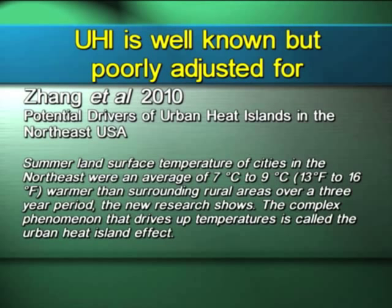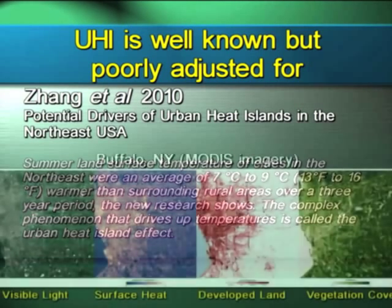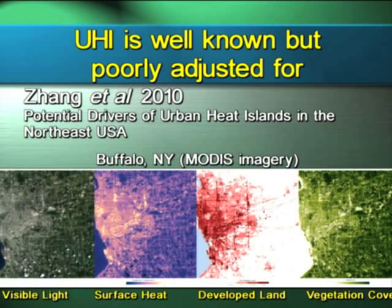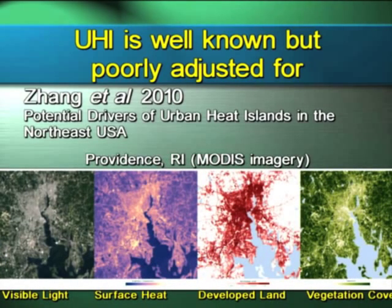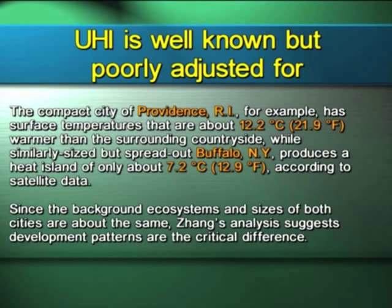There's also this study from Zhang et al. of 2010, which says that summer land surface temperatures in cities in the northeast were on average 7 to 9 degrees centigrade warmer than surrounding areas. They did this by looking at data from the MODIS satellite, examining temperatures and land use changes — this is Buffalo, New York, and Providence, Rhode Island. There's a significant amount of buildup from these cities, and the infrared photography indicates the temperature difference with the surrounding countryside. They found significant jumps in temperature associated with these cities and believe UHI is real. The question is, does it affect long-term trends? I believe it does.